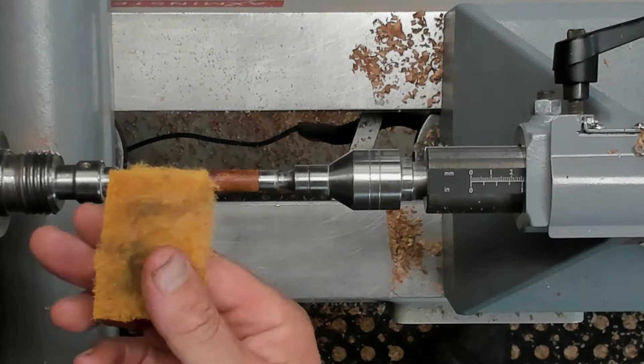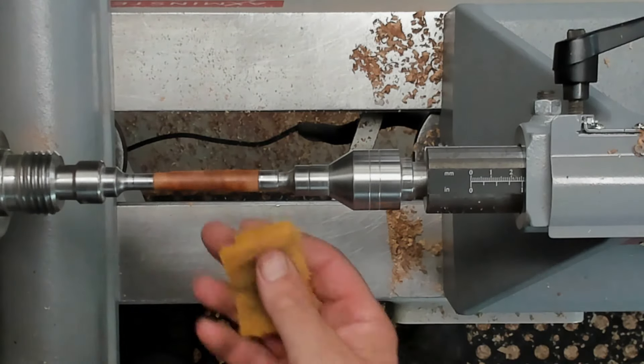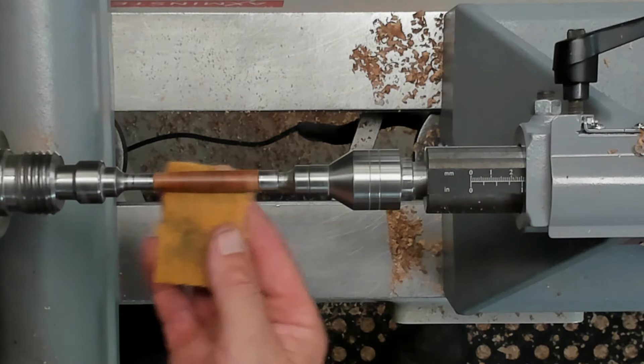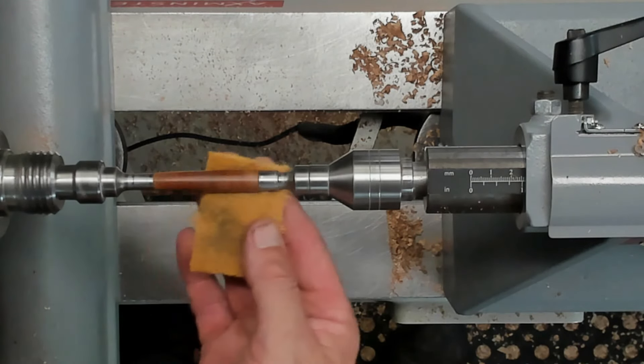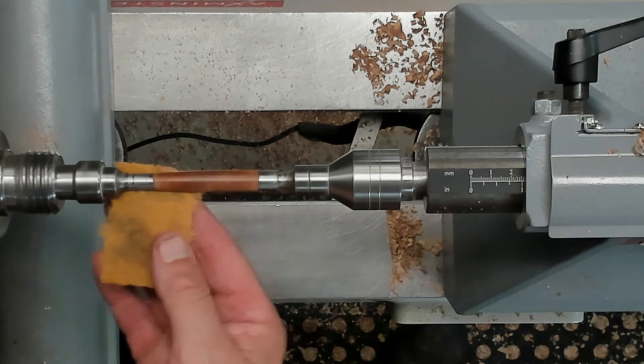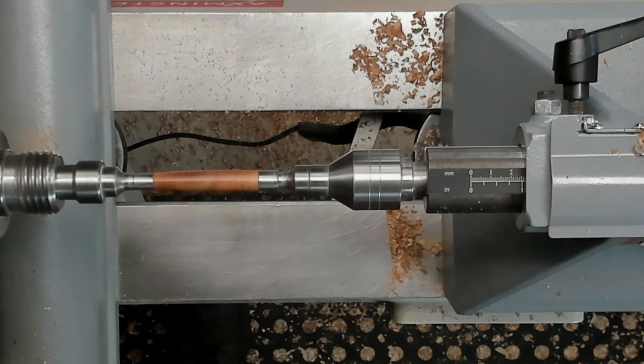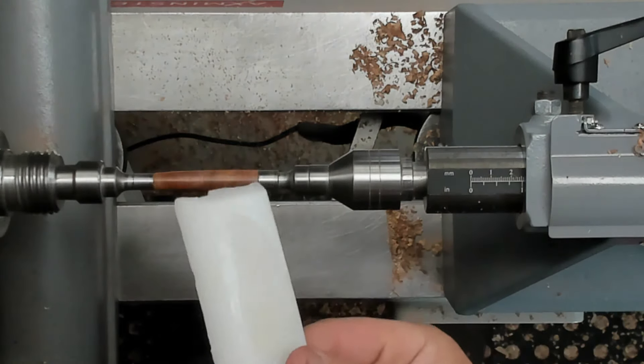So the little yellow scotch-brite pad. Now that is perfectly smooth. I'll just give it a little clean with some alcohol. You can see what dirt came off from sanding.